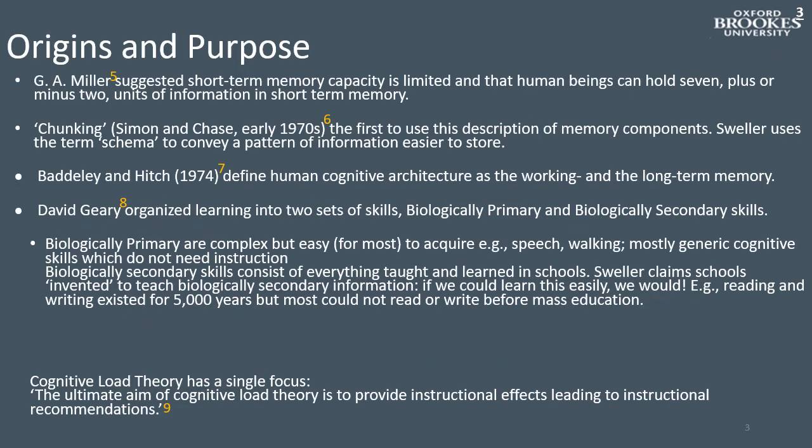Like all theories, Sweller's CLT does not emerge from nowhere. In the 1950s, G.A. Miller published a classic paper suggesting that our short-term memory capacity is limited, empirically demonstrating that human beings can hold 7 plus or minus 2 units of information in short-term memory. This gave rise to the term chunking by Simon and Chase, who were the first to use this description of memory components. Sweller, echoing Piaget, prefers to use the term schema to convey a meaningful pattern of information which is easier to store. He also acknowledges a debt to Baddeley and Hitch (1974), who view human cognitive architecture as the working and the long-term memory.